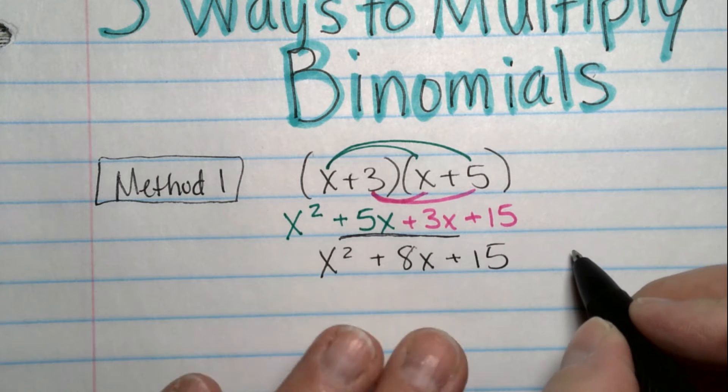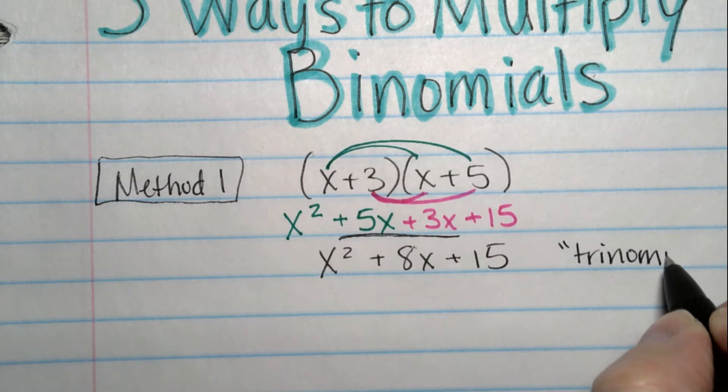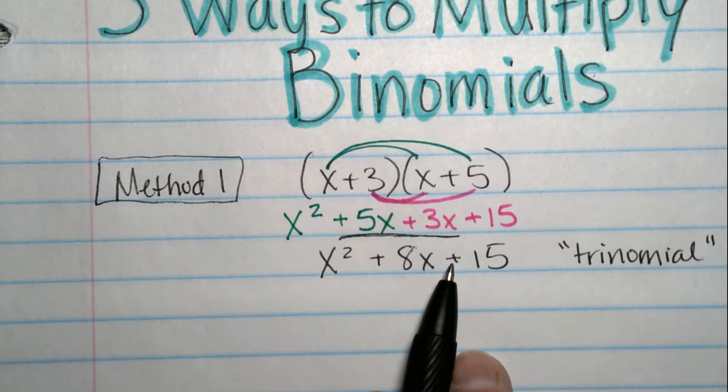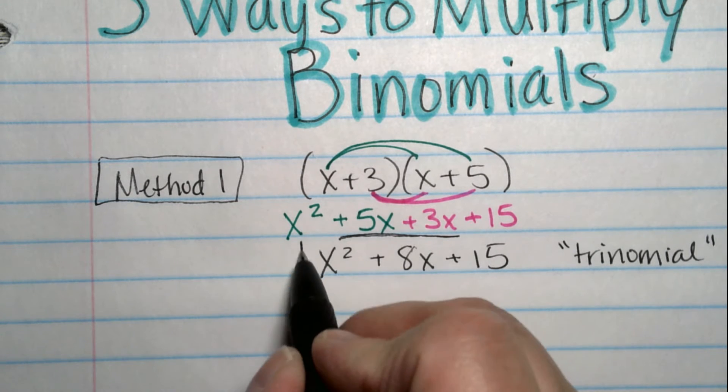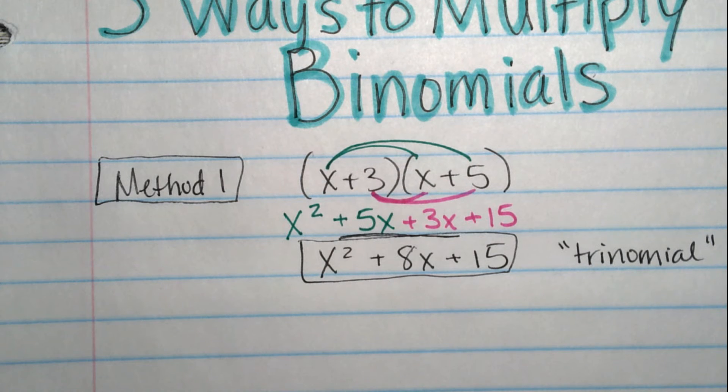And this is the answer. And this is also called a trinomial because it has three terms. One, two, three. And they're separated by plus or minus signs. Trinomial. But it's also the answer when we multiply x plus 3 times x plus 5. That's the first method.